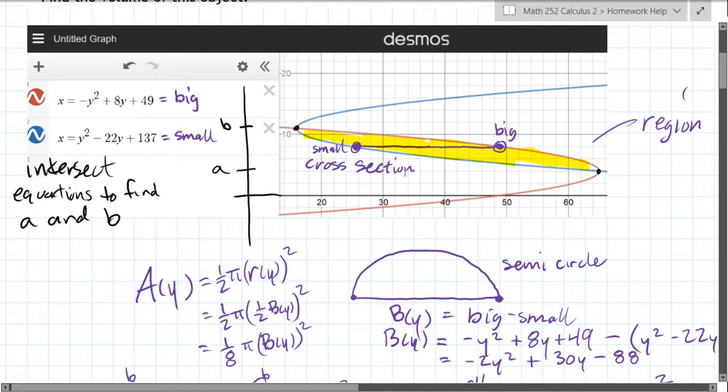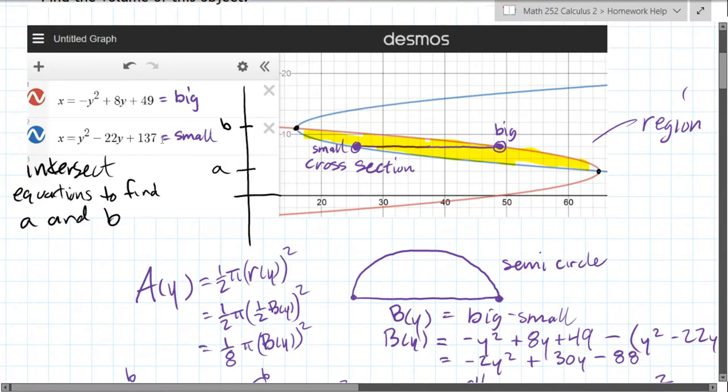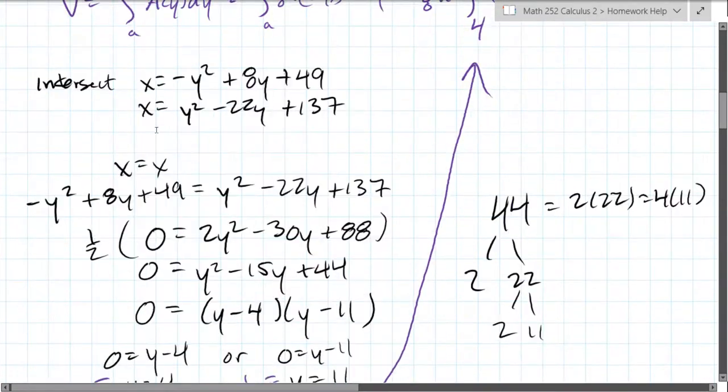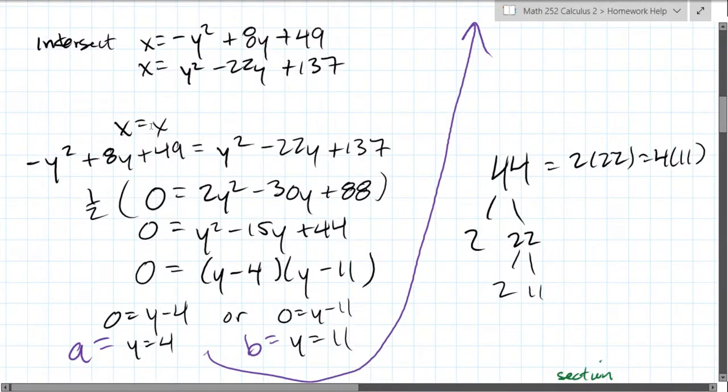However, you should be able to find them yourself. So how do you intersect curves? You set them equal, and we're gonna go ahead and do that here. So I have the two curves written at the top. I'm intersecting them, now I've labeled what I'm doing.